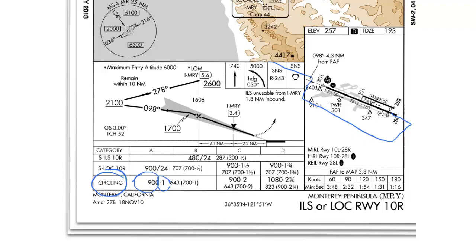We have a different value of 643 feet. 643 feet is the height above airport. On the previous two straight-in approaches, there was the height above the touchdown zone elevation, and now we have the height above the airport elevation. This is also because you are flying the traffic pattern, so it brings you down to the specific height above the actual airport.